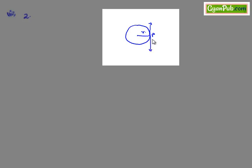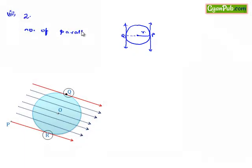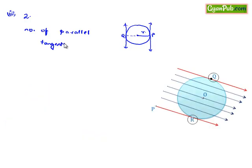Now, to this, a parallel tangent can be drawn at the distance of only the diameter, because the tangent drawn at any other point will have some angle of inclination to the drawn tangent. Therefore, only the number of parallel tangents that can be drawn at most to the circle will be 2.